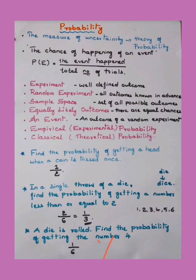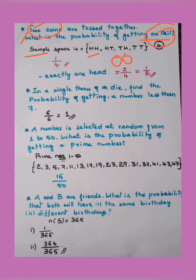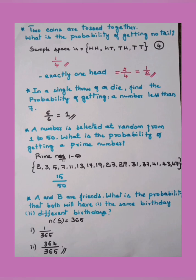Two coins are tossed together — what is the probability of getting no tail? The sample space for two coins is: both heads (HH), one head and one tail (HT), one tail and one head (TH), or both tails (TT) — four outcomes. For no tail, we cancel all outcomes containing a tail: HT, TH, and TT are removed. Only HH remains, so the answer is one by four.